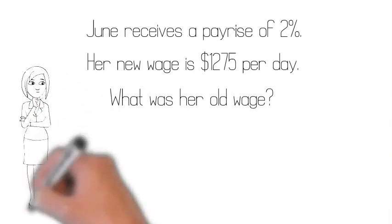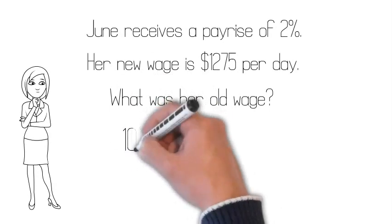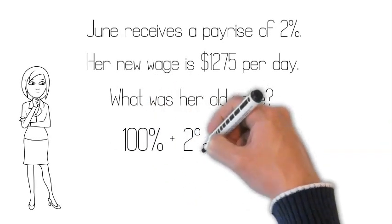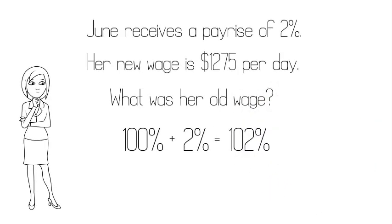This one's tricky, because $1,275 is not 2%. Let's think about it in terms of percentages. Her old wage was 100%. Her pay rise is 2%. So her new wage must be 102%.